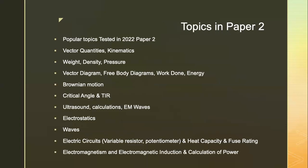In summary, the popular topics tested in the 2022 Paper 2 were: vector quantities, kinematics, weight, density, pressure, vector diagram, free body diagrams, work done and energy, Brownian motion, critical angle and TIR, ultrasound calculations, EM waves, electrostatics, waves, electric circuits, heat capacity and fuse rating, electromagnetism, electromagnetic induction, and calculation of power.